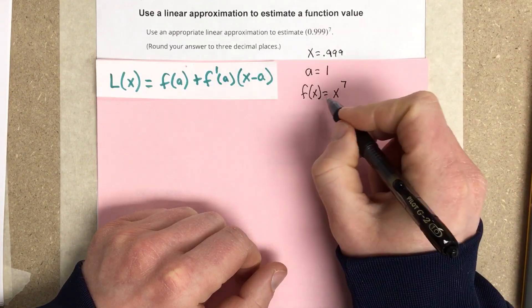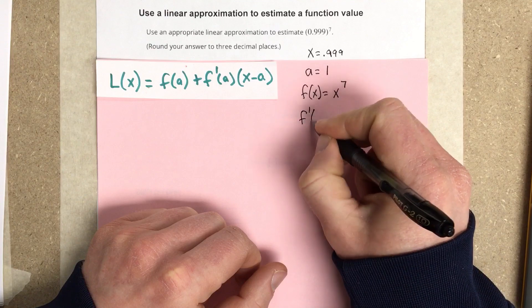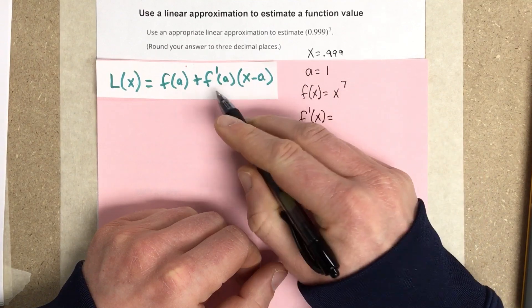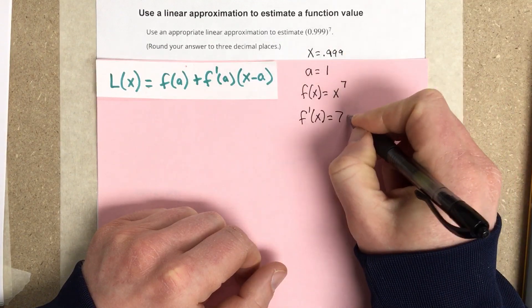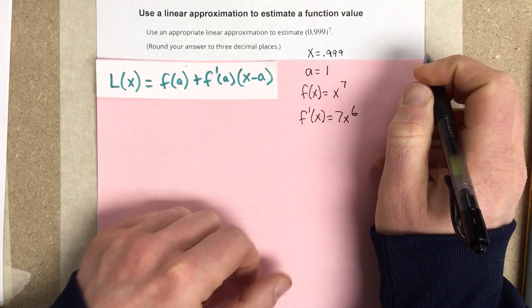Now, I'm going to find f prime of x because I'm going to need it to evaluate this f prime of a piece. So I'm going to have 7x to the 6th as my f prime of x.